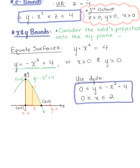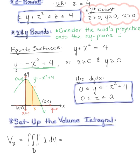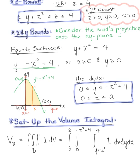We now have everything needed to set up the volume integral. The volume of solid region D is defined by a triple integral over D with integrand 1 and the volume differential. The outermost integral is with respect to x, from 0 to 2. The middle integral is the y integral with bounds 0 to negative x squared plus 4. The innermost integral is with respect to z, from y plus x squared to 4. The order of integration is dz dy dx.